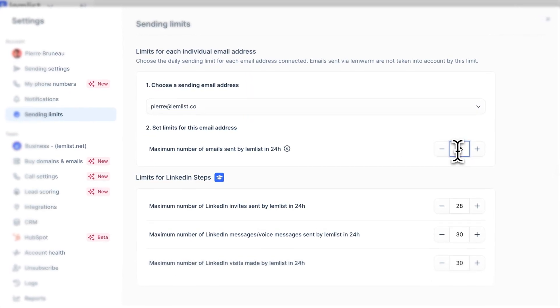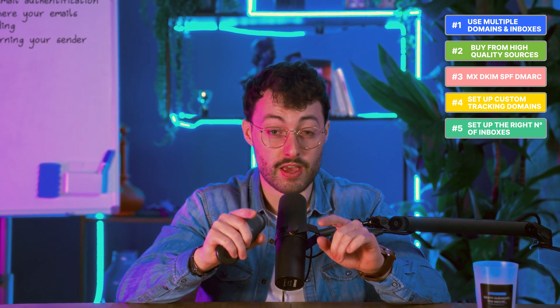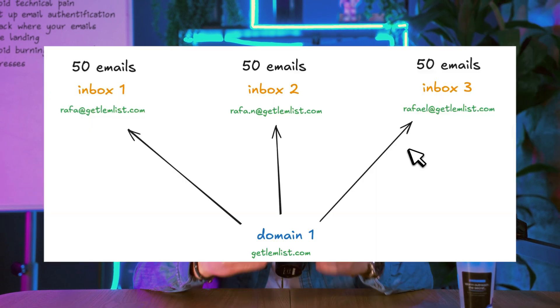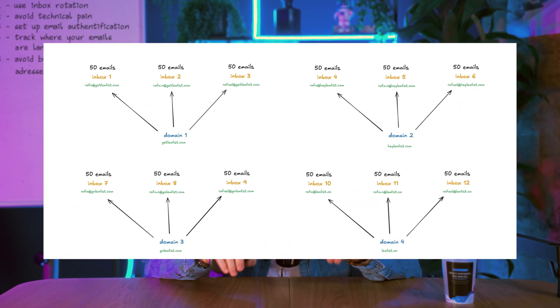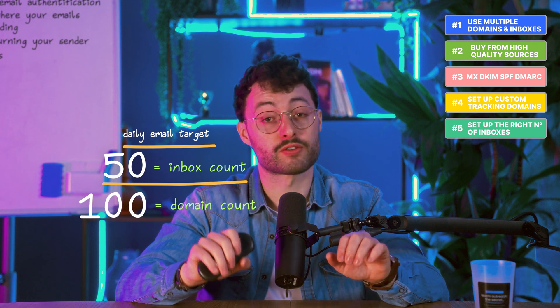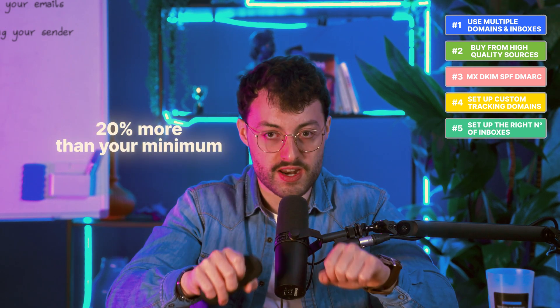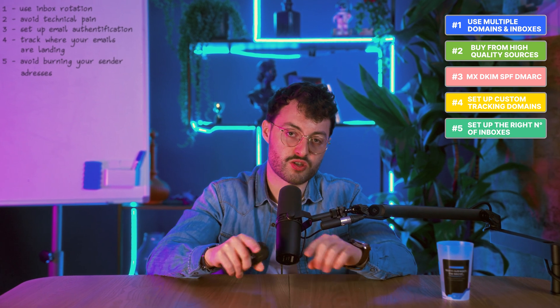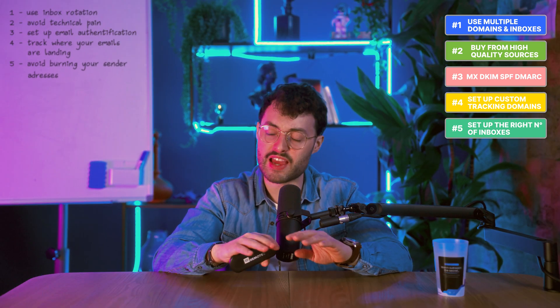Fifth, set up the right number of inboxes. There's no mystery to how many domains and inboxes you need — it's just math. If you send too many emails from too few inboxes, your chances of hitting spam go way up. Here's a simple rule of thumb: no more than 50 emails per inbox per day — if you want to avoid all kinds of problems, get down to 30. Use 2-3 inboxes per domain and 3-4 domains per admin console. Take your daily email target, divide by 50 for your inbox count, divide again by 100 for your domain count. Always build in 20% more than your minimum — that extra capacity lets you pause or swap out inboxes without stopping your outreach. So if you plan to send 200 emails per day, set up 5 or even 6 inboxes.